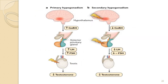In primary hypogonadism, the pathology is in the testis — testosterone is low, leading to elevated FSH, LH, and GnRH as the body attempts to stimulate the testis. In secondary hypogonadism, the problem is in the hypothalamus and pituitary, resulting in low GnRH and low FSH and LH, which leads to low testosterone production in the testis.